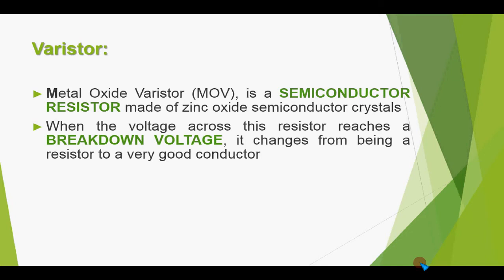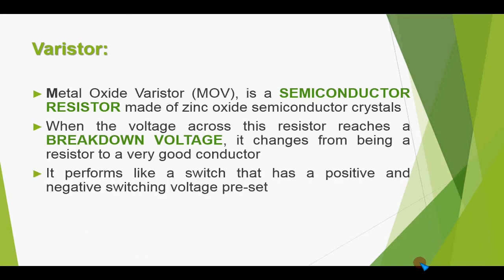At reaching the breakdown voltages, the resistor breaks down and starts conducting the voltages. It performs like a switch that has positive and negative switch voltage preset values. Here the point can be noted that the action of the resistor can be compared to a pair of zener diodes wired back to back in series. It will provide the functionality better than the zener diodes.